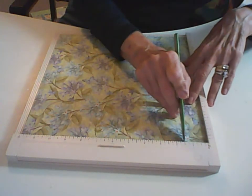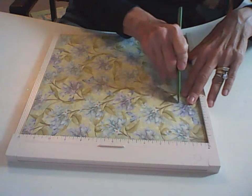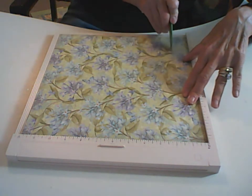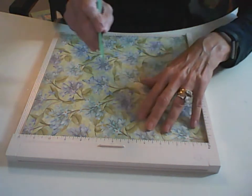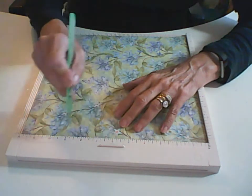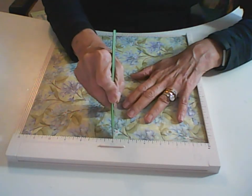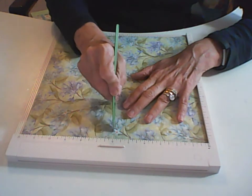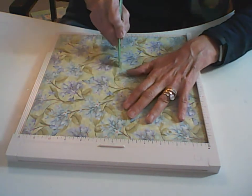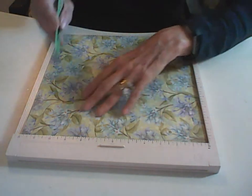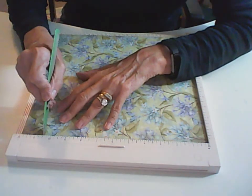So you're going to make your first score at one and a half inches, and I would say take it easy because I was just trying to demonstrate this and I jumped one of the little score lines. You're going to do another one at six inches and another score at ten and a half.